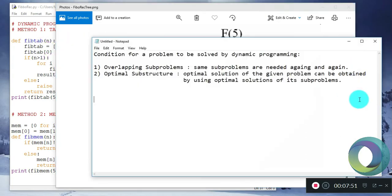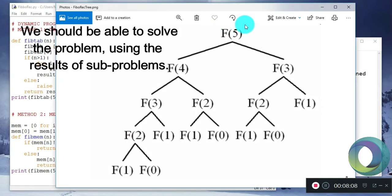The second condition is optimal substructure. The optimal solution of the given problem should be obtained by using optimal solution of its subproblems. What this means is, like your problem is to calculate F of 5, subproblems are F of 4, F of 3, F of 2, etc.